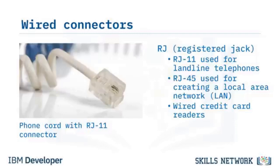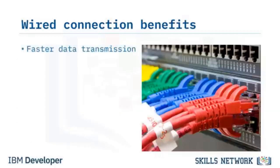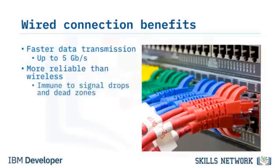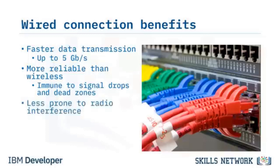The RJ45, like the RJ11, has a plastic tab to prevent misconnections between the connector and the port. Wired connections allow faster data transmission, offering speeds up to 5 Gbps, while wireless connections have a speed of only 1 Gbps. They are more reliable than wireless connections because they have consistent speed and connectivity, and are not impacted by weather conditions, immune to signal drops and dead zones. Wired connections are also less prone to radio interference, resulting in fewer dropped packets and greater network stability.